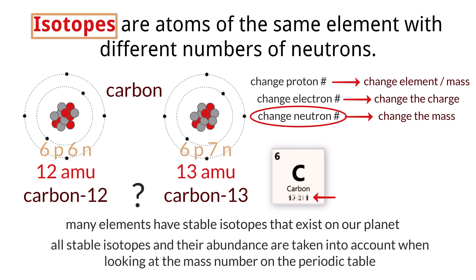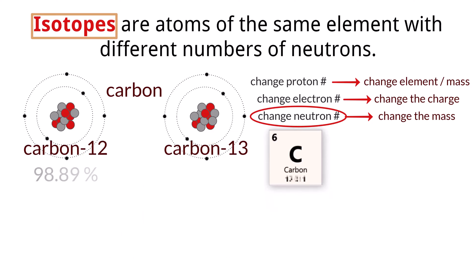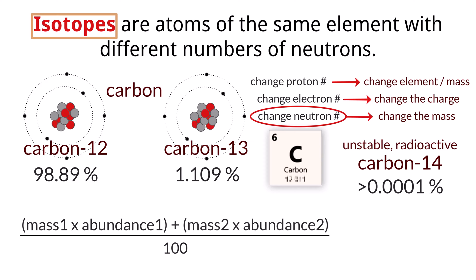But we do it in a way that takes into account the relative abundance of each isotope found on the planet. On Earth, around 98.89% of carbon we find is carbon-12, with around 1.109% of the carbon being carbon-13. Another unstable and radioactive isotope of carbon exists, which is carbon-14, but this takes up less than 0.0001% of all carbon atoms. On the periodic table, you will see the relative atomic mass of all isotopes with their natural abundance taken into account. We calculate the relative atomic mass by multiplying each abundance percentage by their mass number, adding those together, and then dividing by 100.